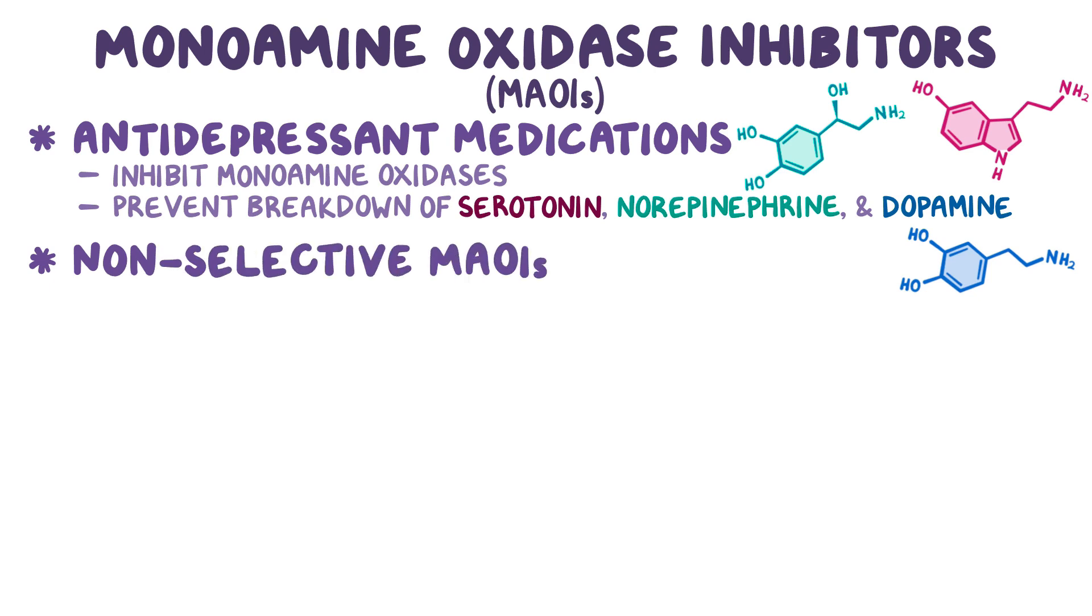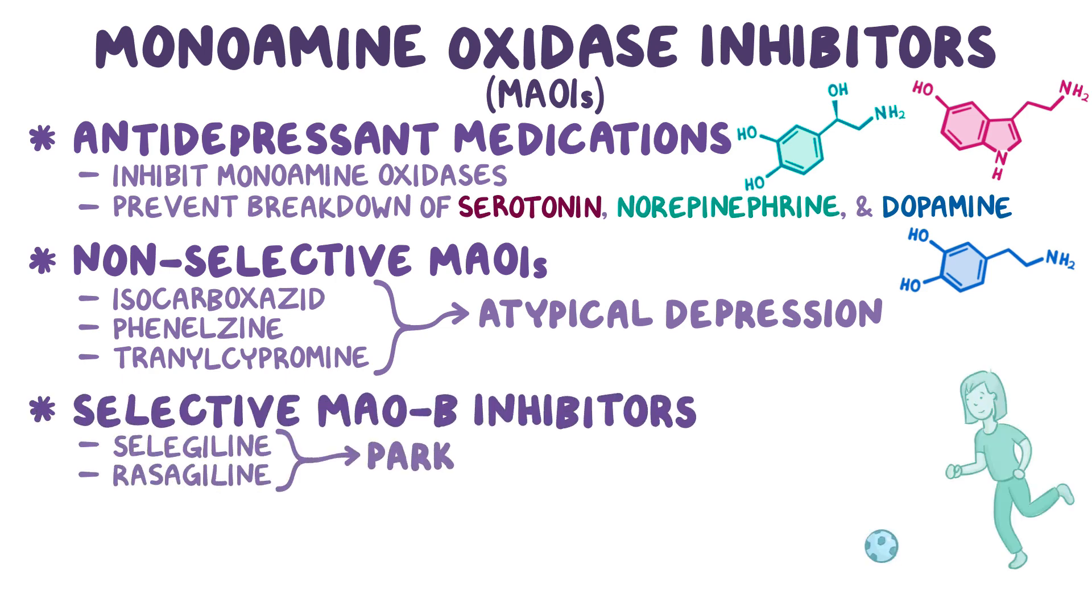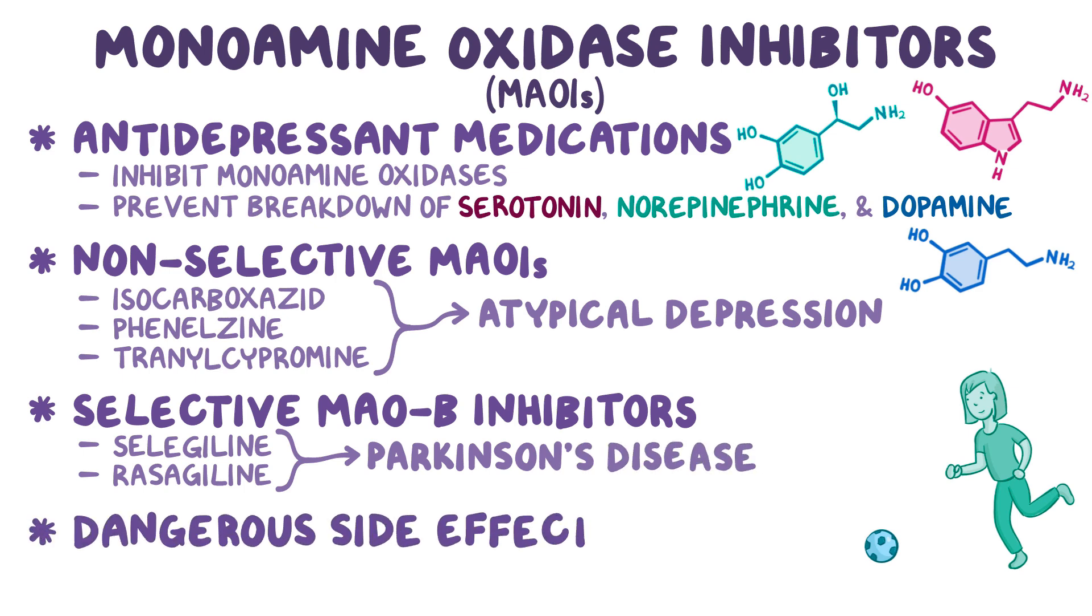Non-selective MAOIs, which include isocarboxazid, phenelzine, and tranylcypromine, are second or third line antidepressants that are particularly effective against atypical depression. Selective MAO-B inhibitors, such as selegiline and rasagiline, can treat Parkinson's disease. These medications are not the first-line therapy for depression due to dangerous side effects like serotonin syndrome and hypertensive crisis.